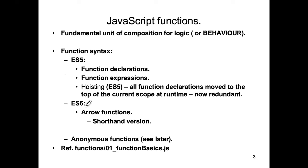ES6, which came in in 2015, introduced arrow functions. Arrow functions were really a cleaner syntax for function expressions. There was another aspect to arrow functions that doesn't impact us, but as far as we're concerned it's just a cleaner syntax for defining a function. There's also a shorthand version of arrow functions. As a beginner you'd use the longhand version, and as you get more comfortable you could start using the shorthand version.